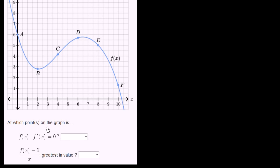We're asked: at which points on the graph is f of x times f prime of x equal to 0? If I have the product of two things equal to 0, that tells us at least one of these two things needs to be equal to 0. So first of all, let's see — are there any points where f of x is equal to 0?